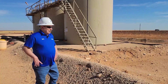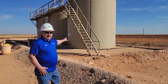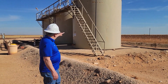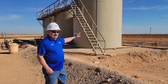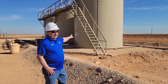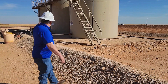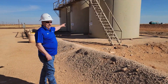We have three tanks on this location. The first two tanks are oil tanks and the last tank is a water tank. The oil comes off the top of the treater and goes to the two oil tanks, while the water comes off the water leg and the hydrostatic valve on the other side of the treater and goes into that last tank.